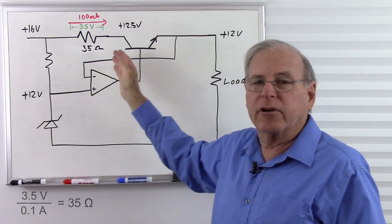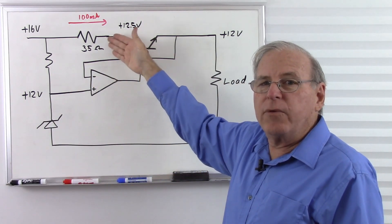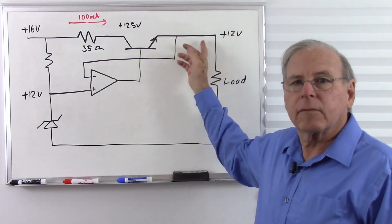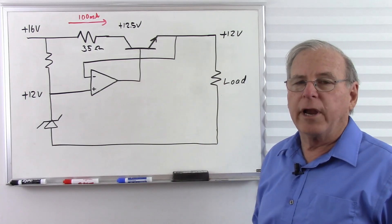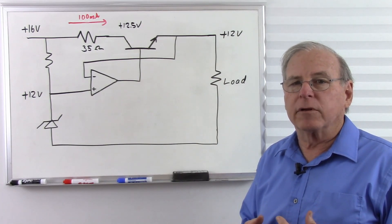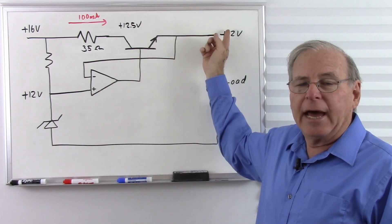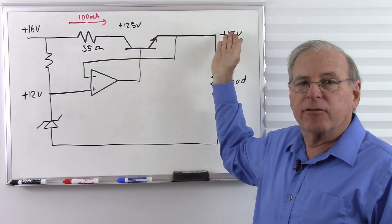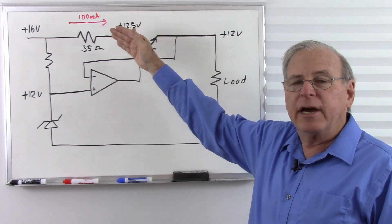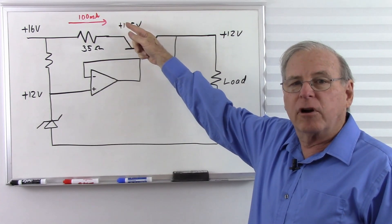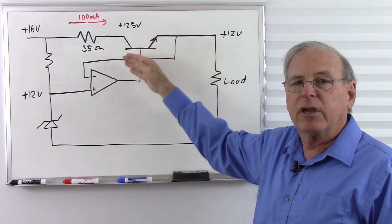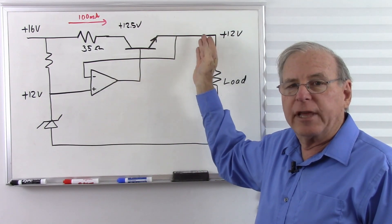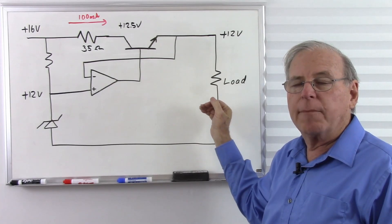So now we have a circuit that, when we reach 100 milliamps, this collector voltage will start to drop. This design delivers 100 milliamps at our desired 12 volt output. Up to 100 milliamps it maintains 12 volts, but once we exceed 100 milliamps, the collector voltage drops below 12.5 volts, the op amp can no longer compensate for the voltage loss at the output, and the voltage starts to drop.